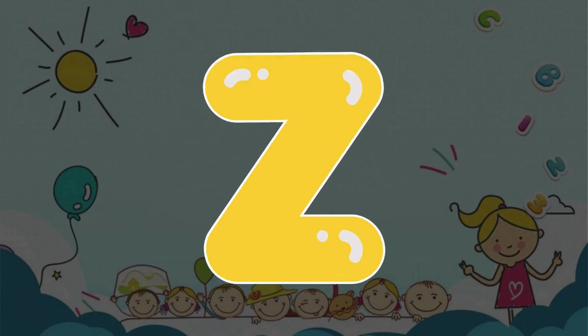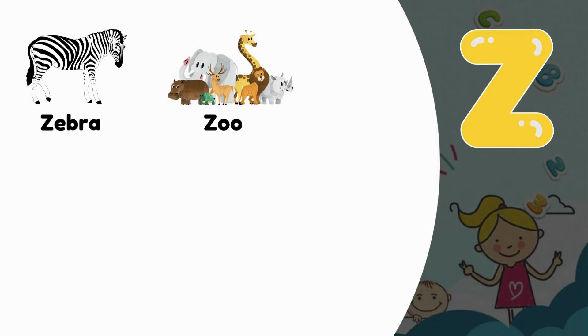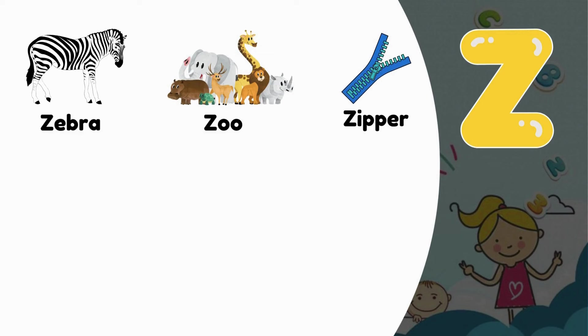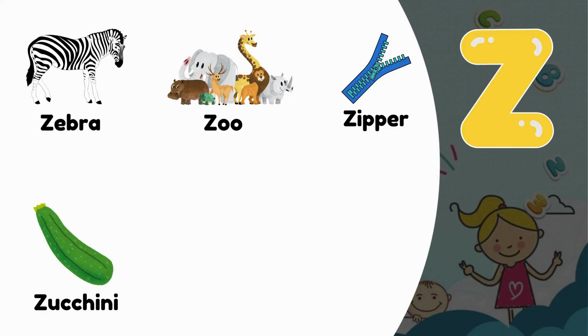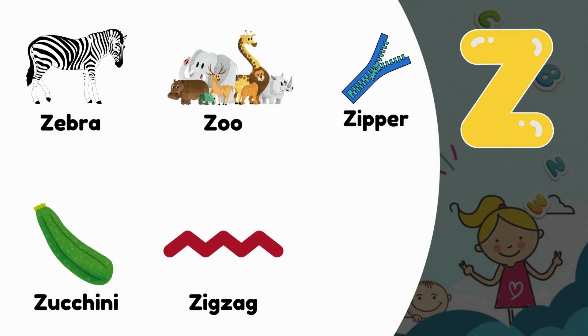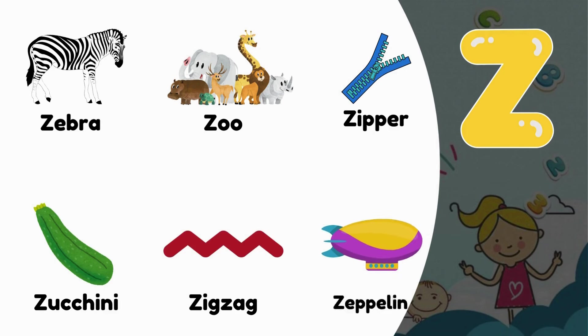Z. Z is for Zebra. Z is for Zoo. Z is for Zipper. Z is for Zucchini. Z is for Zigzag. Z is for Zeppelin.